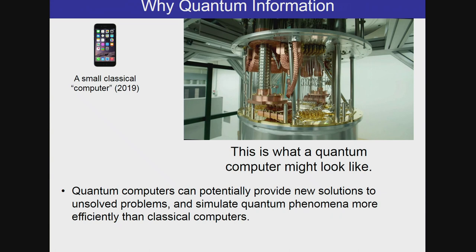The answer is that quantum computers can potentially provide new solutions to unsolved problems and simulate quantum phenomena faster than classical computers. For example, quite long ago in the 1980s, Peter Shor had proven that you can use quantum computers to find the prime factors of large integers. And this is something that a classical computer cannot do. And it's also the basis of the RSA cryptography that is the most widely used public key cryptography now.